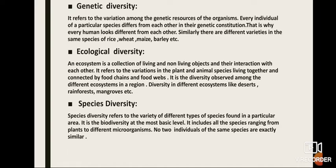The second type is ecological diversity. An ecosystem is a collection of living and non-living objects and their interaction with each other or the environment. It refers to the variation in plant and animal species living together and connected by food chains and food webs. It is the diversity observed among different ecosystems in a region, such as deserts, rainforests, and mangroves.